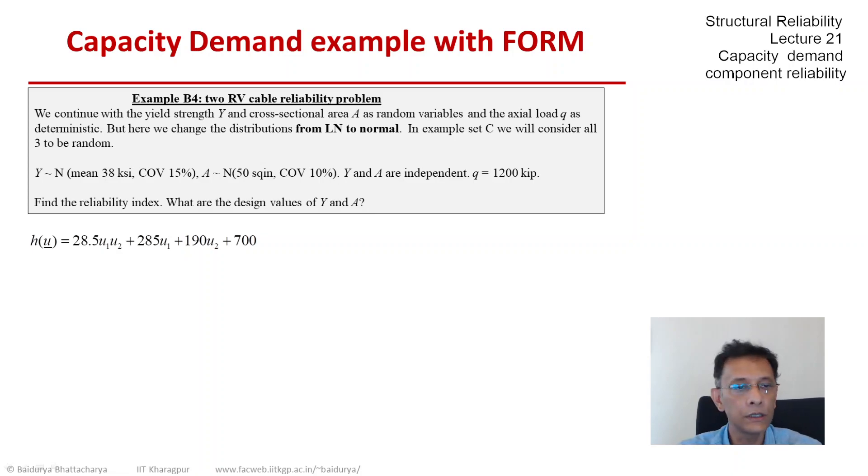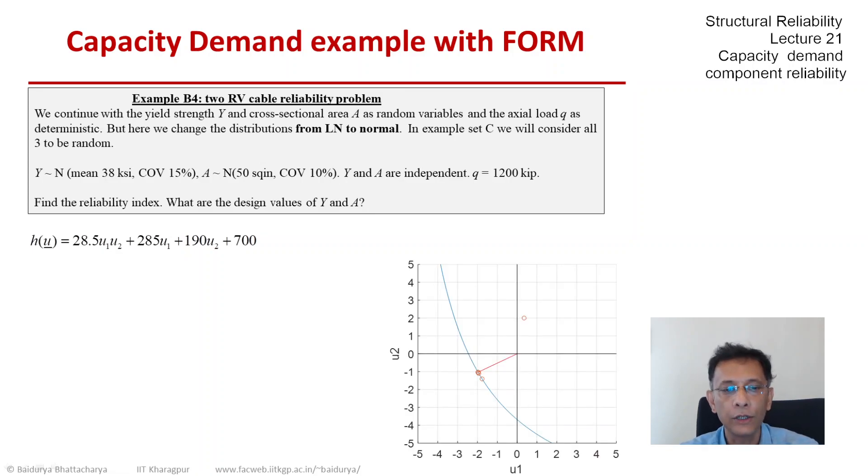This is our limit state equation. If we plot it on U1, U2 space, we see that it's a curved line and we are going to find the minimum distance to this blue line. This is the failure region to the left of the blue line. And just to make sure that is the failure region, we can see whether the origin is in the failed or the safe set. Putting U1 and U2 as 0, we see that the function is positive. So the origin is definitely contained in the safe set.